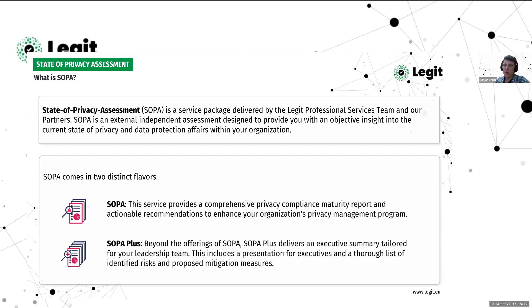SOPA is designed to analyze your current privacy compliance landscape, delivering a comprehensive maturity report that highlights where you are and charts a clear path forward with actionable recommendations. Then there's SOPA Plus, which is typically done at the beginning when we start working with a new customer. It builds upon SOPA by offering an executive summary crafted for the leadership team — a detailed executive presentation, a thorough list of identified risks, and proposed mitigation measures.